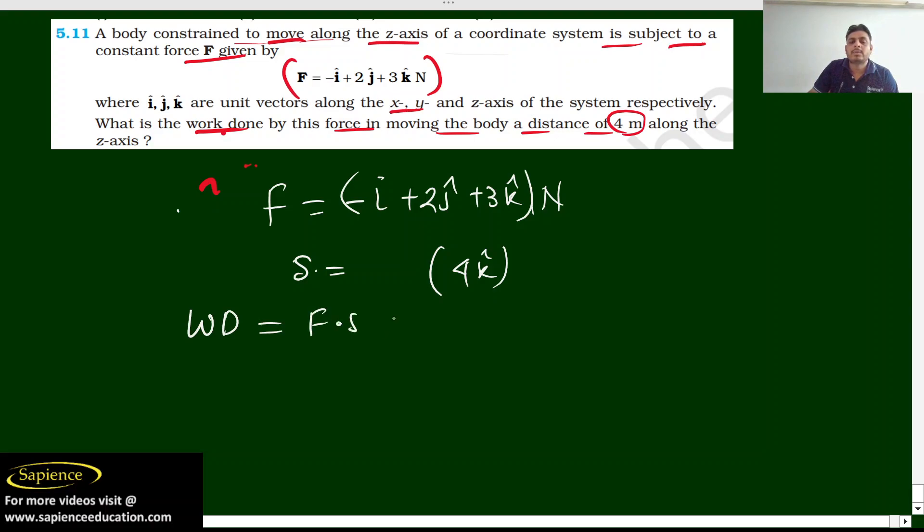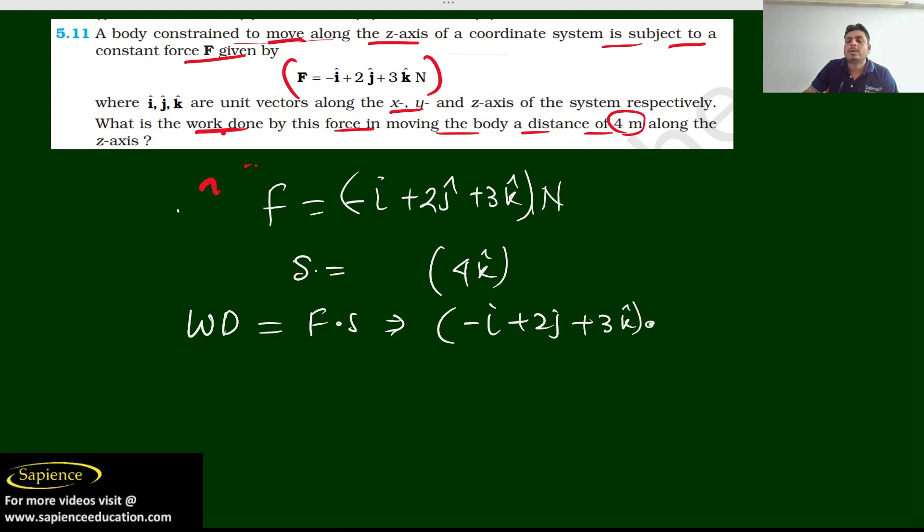F dot s. Dot product is the work done. So can we write here minus i plus 2j plus 3k dot 4k. Now you know how to do the dot product.